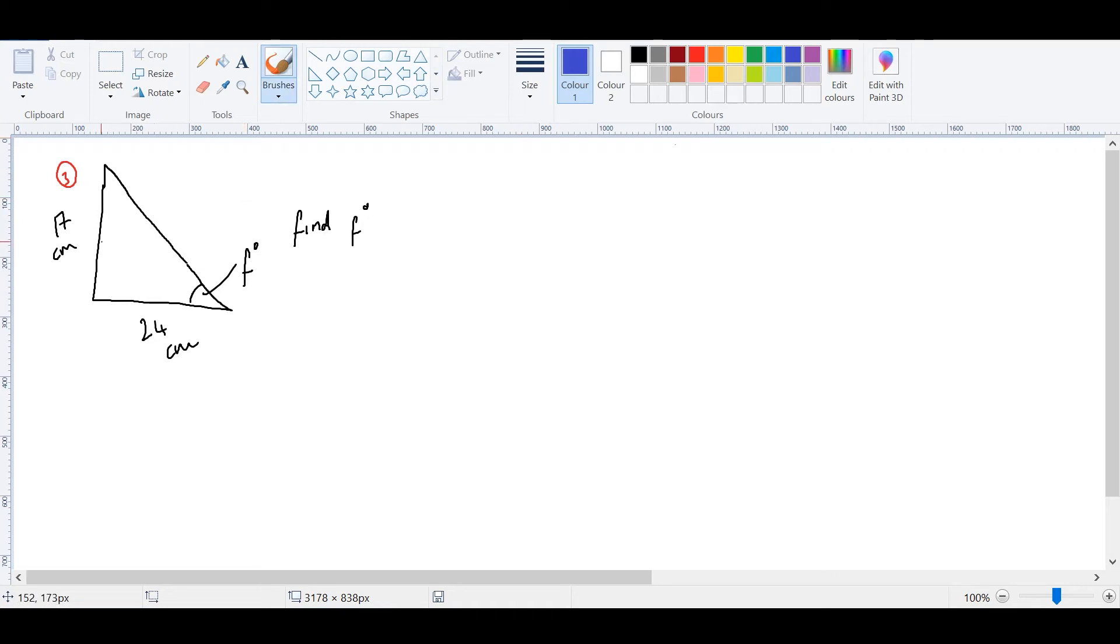With this question, we have been given a length, and we've been given a length. We should also remind ourselves that this is a right angle triangle, and we've been asked to work out an angle. So again, we're going to use trigonometry.